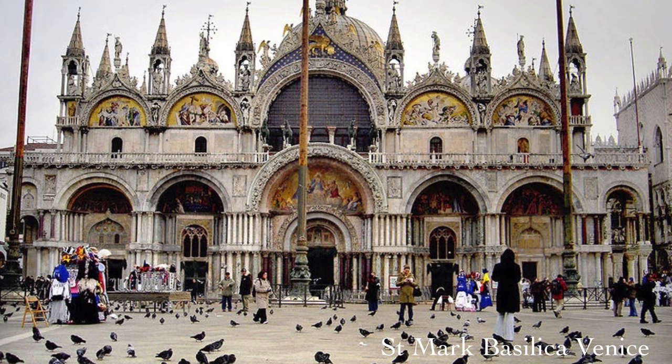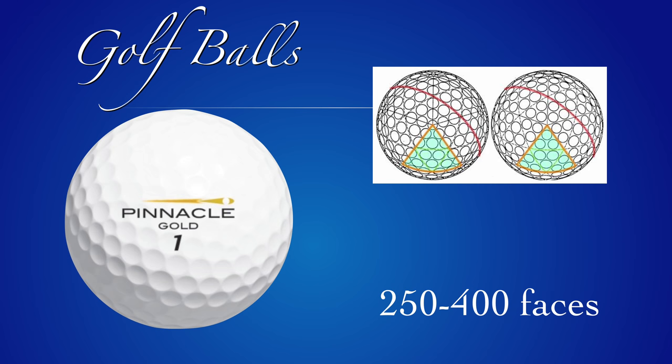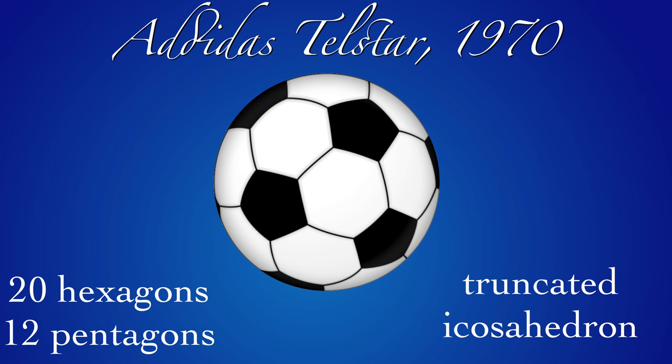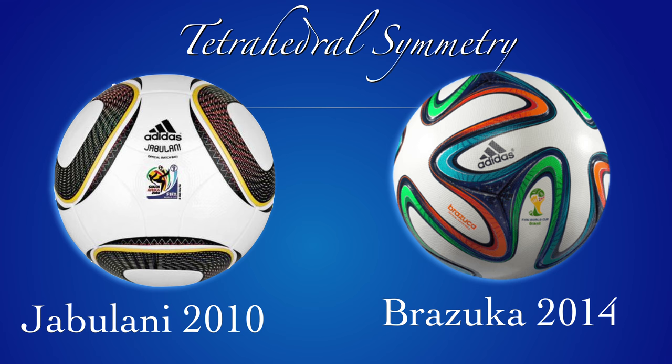The Kepler solids are very beautiful. They appear in architecture like in the St. Mark Basilica in Venice. But polyhedra also appear in more mundane human ventures like golf — there, the players shoot around polyhedra which have about 250 to 400 faces. Also, soccer players chase around polyhedra, mostly truncated icosahedra. By the way, this solid is one of the Archimedean solids. More modern balls have simpler symmetry — the last two incarnations used in the World Cup actually have tetrahedral symmetry. Here is an animation of all the soccer balls.